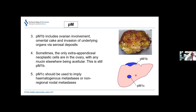pM1B includes ovarian involvement, since ovarian involvement is part of the picture of pseudomyxoma peritonei. Sometimes neoplastic cells are found only in the ovary with acellular mucin elsewhere — this is still pM1B. pM1C implies haematogenous or non-regional nodal metastases — for example, an intrahepatic metastasis that has spread through the bloodstream would be pM1C, while pseudomyxoma peritonei on the liver surface pushing into the parenchyma would remain pM1B.